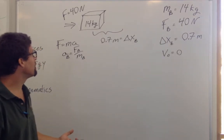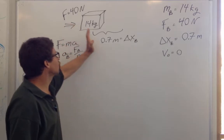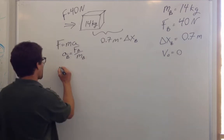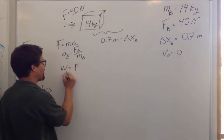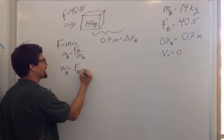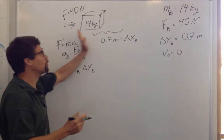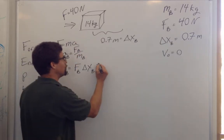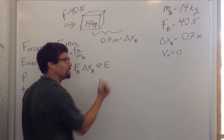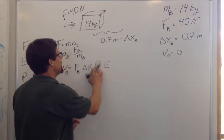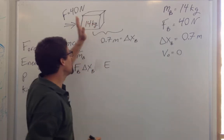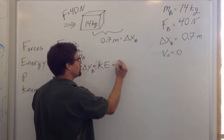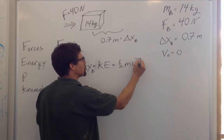How about energy? There's a force over a distance — that's work, that's a change of energy. The work on the box is the force on the box times the displacement of the box. That work is going to be converted, because there's no friction, to kinetic energy of the box, which is one-half mv squared.